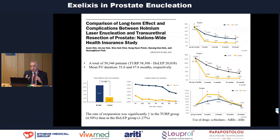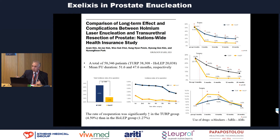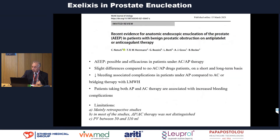Another large study from a reimbursement database from Korea with almost 60,000 patients and a follow-up of five years found that the rate of re-operation was significantly higher in the TURP group compared with the HoLEP group. In addition, patients treated with HoLEP had a lower percentage of need for drug treatment after the procedure.